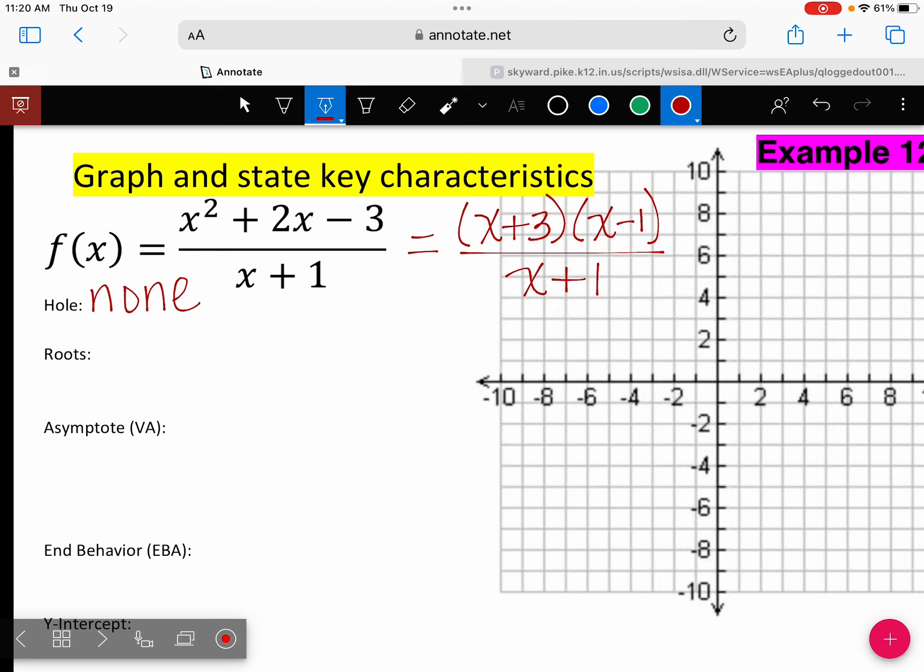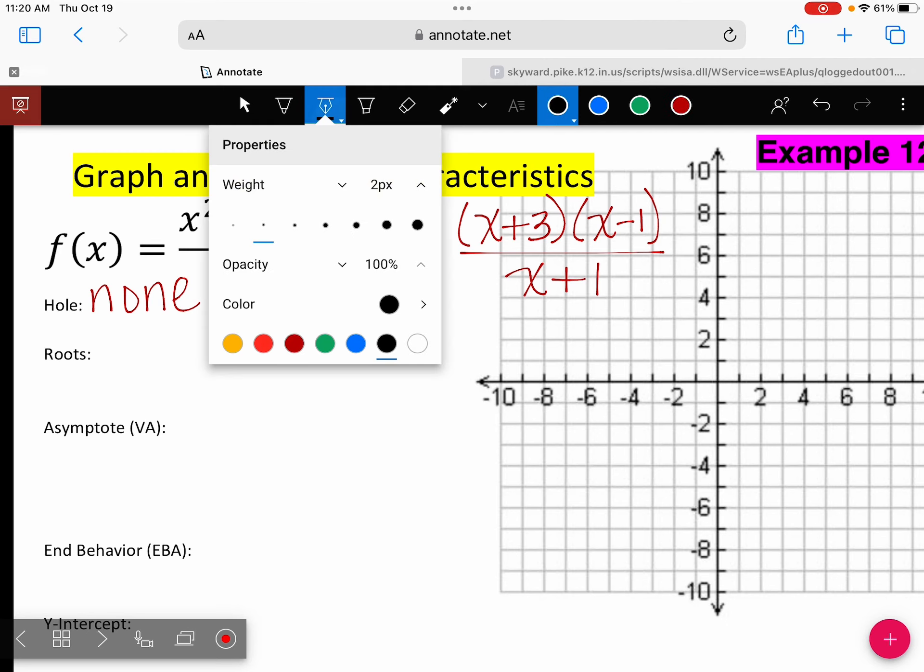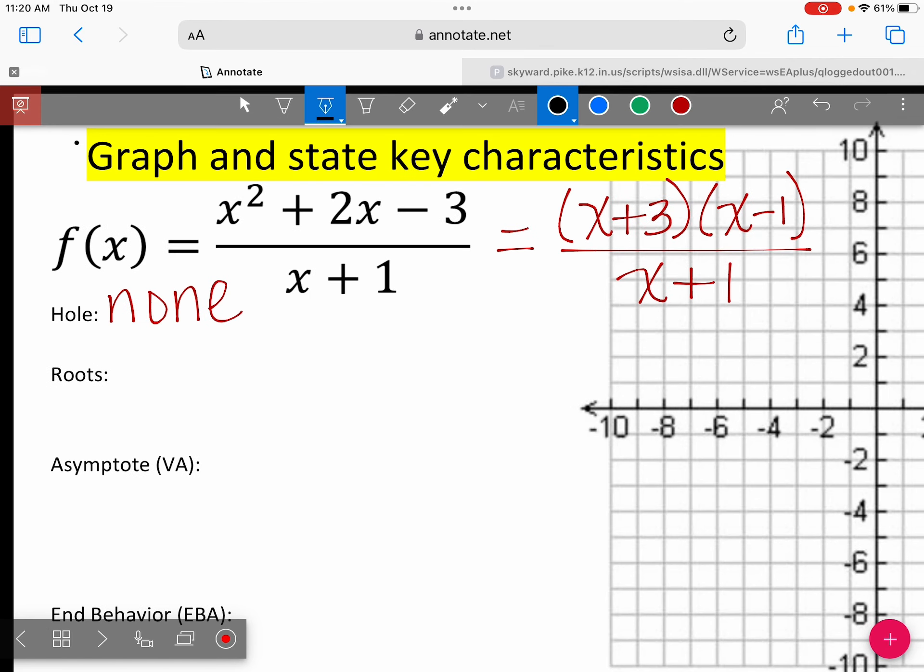Okay, roots. Where do you look at for your x-intercepts? Where are you going to look? Numerator. How many x-intercepts will you have? Two. Go ahead, set both of those equal to zero. And you're writing that as an ordered pair. So I'm going to set the x plus 3 equal to zero and the x minus 1 equal to zero. We have two x-intercepts.